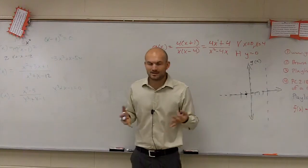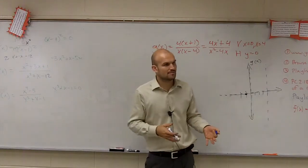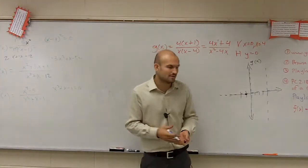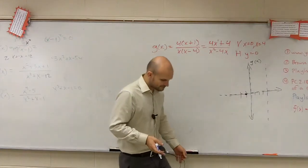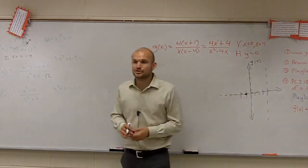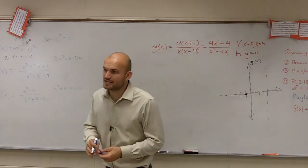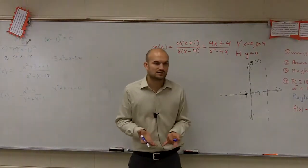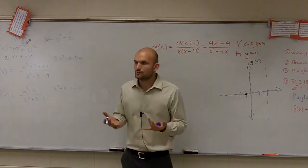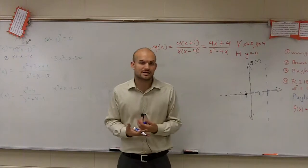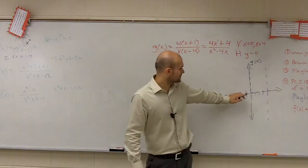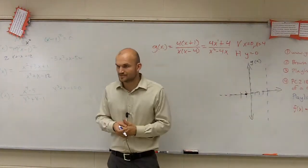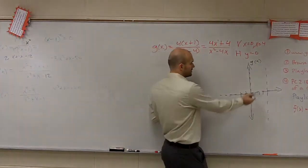Now, what does the graph look like? I'm not going to spend our time graphing them — I want you guys to put them in your calculator and graph them up. However, I do want you to show me that you can find your solution points. To do that, pick two points to the left and right of every vertical asymptote.